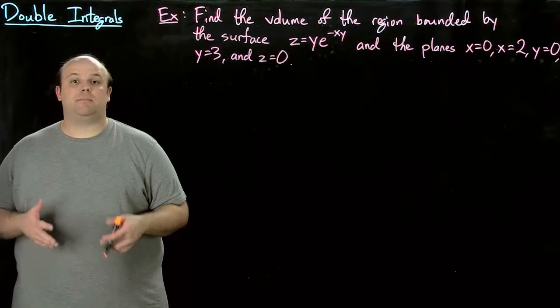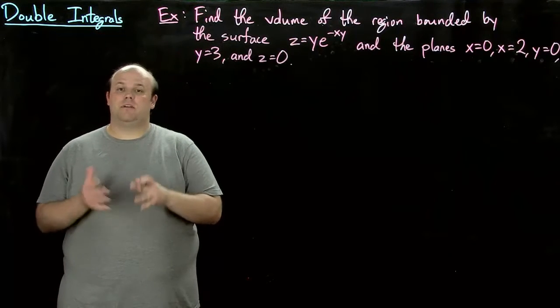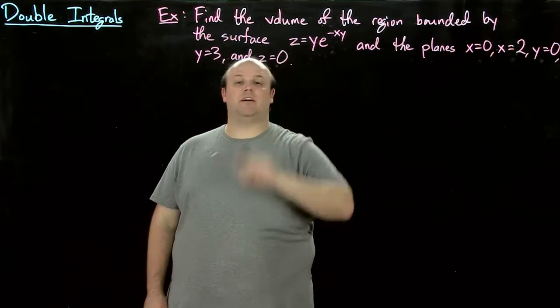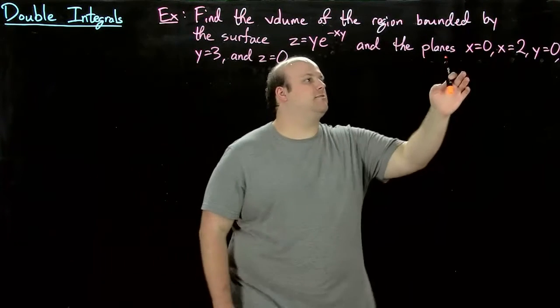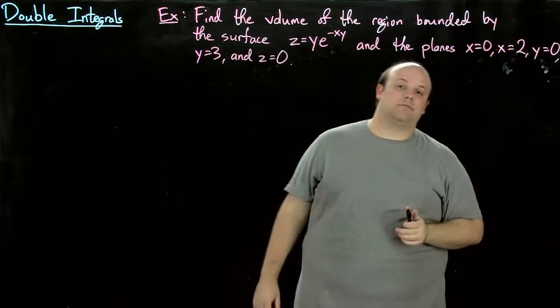Let's finish up here by doing a volume application. We want to find the volume of a solid region bounded by the surface z equals y e to the minus xy, and the planes x equals 0, x equals 2, y equals 0, y equals 3, and z equals 0.